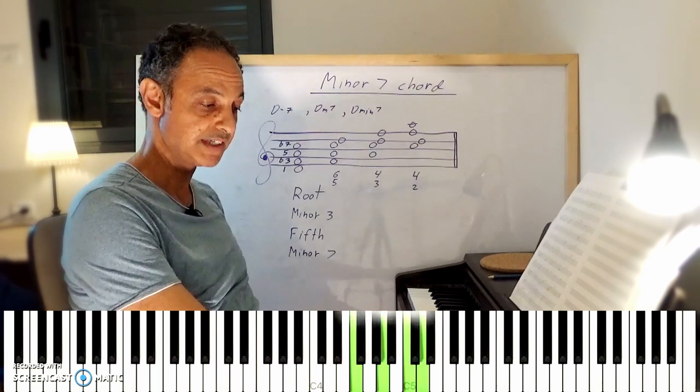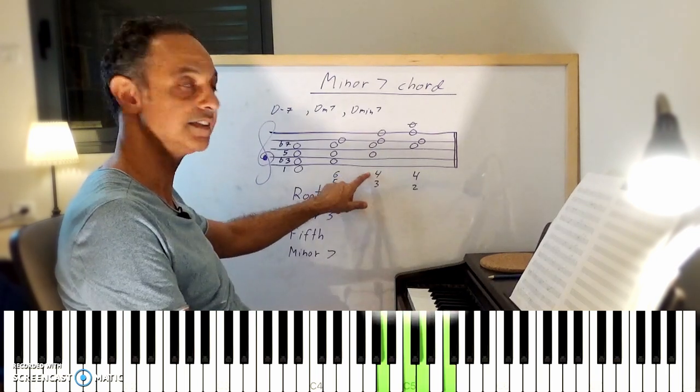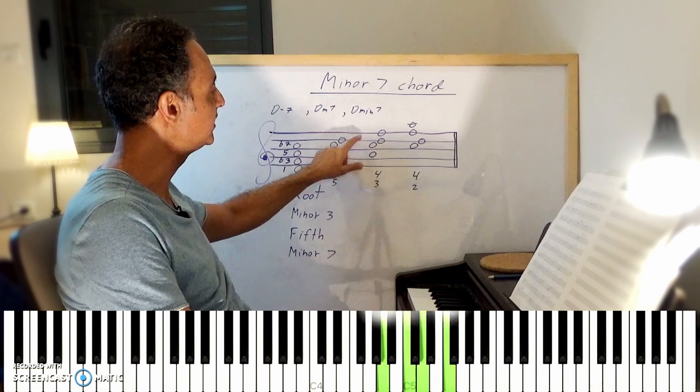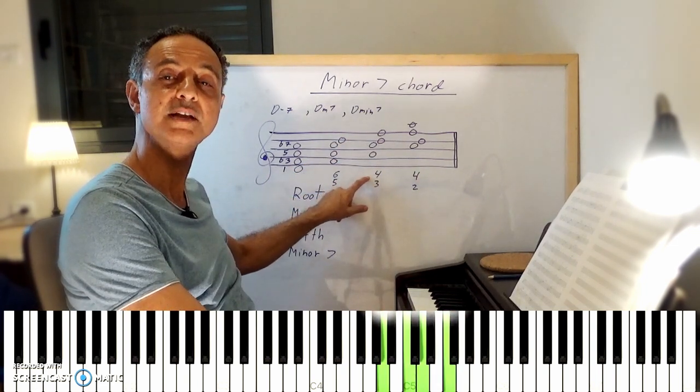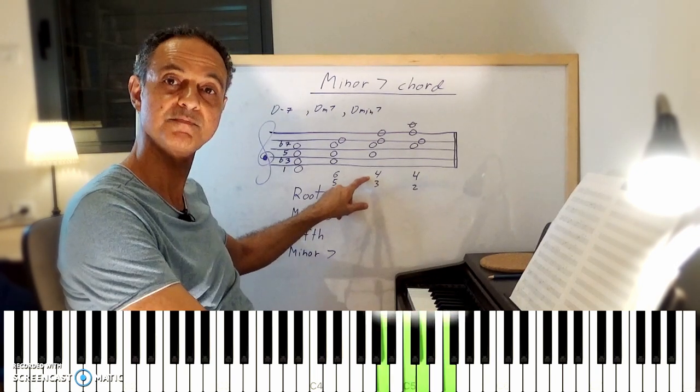Let's say you want to take the note F, the third, up an octave. You get the second inversion, which is A, C, D and F, which is also called 4-3. 1-2-3-4. 1-2-3.